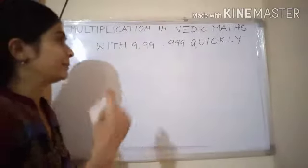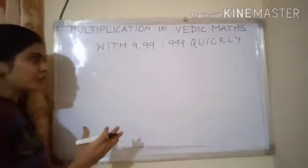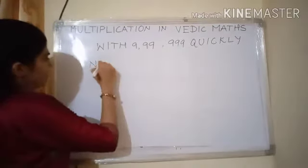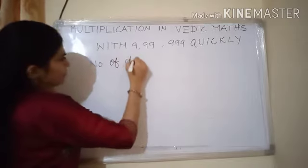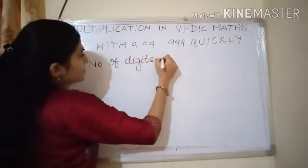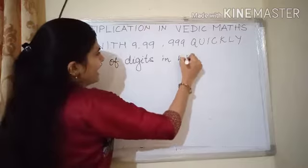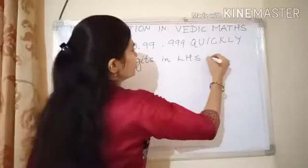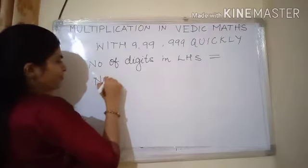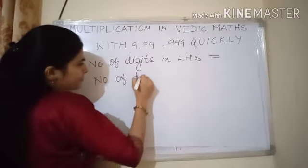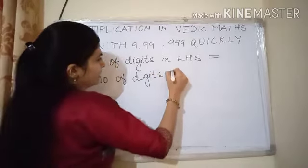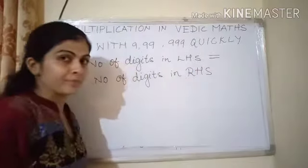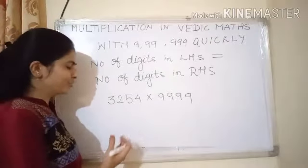Now let's start. How to do this quickly? For the quick solution, there is a rule that number of digits in LHS, it means on the left hand side, should be equals to number of digits in right hand side. Let's see how to do it.